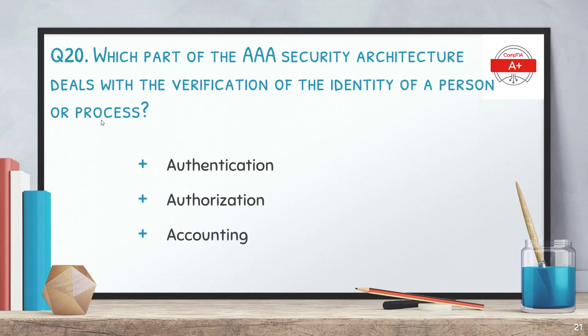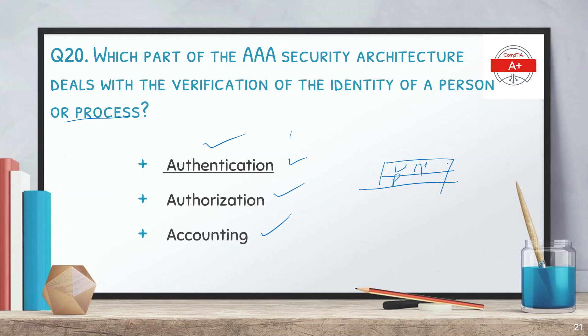Question 20: What part of the AAA security architecture deals with verification of the identity of a person or process? The options are: authentication, authorization, and accounting. The correct answer is authentication. When you input a username and password, that process is called authentication — something we do daily with emails, laptops, and on the internet.